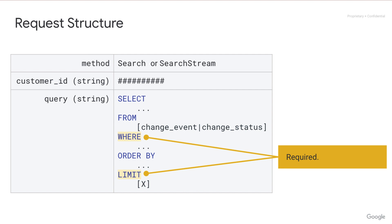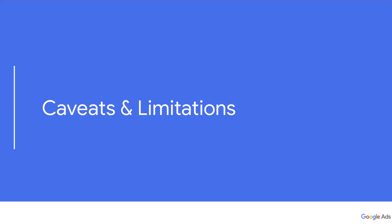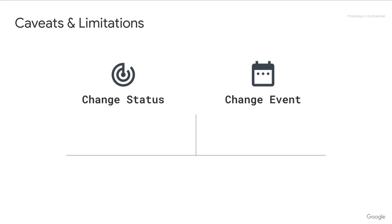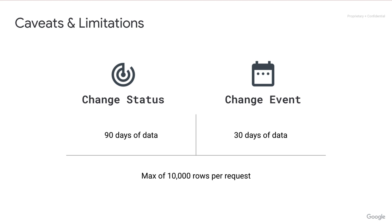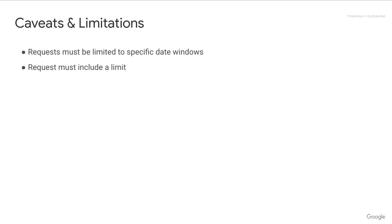That brings us to the last topic for today's video: caveats and limitations. Both the Change Status service and Change Event service have some limits that will affect how you use them. For Change Status, you will only have access to 90 days of data. For Change Event, 30 days. Then for both services, there is a maximum of 10,000 rows per request. In addition, the request must explicitly include closed date windows — that is the WHERE requirement mentioned earlier. Requests must also include a LIMIT, which has a maximum of 10,000.